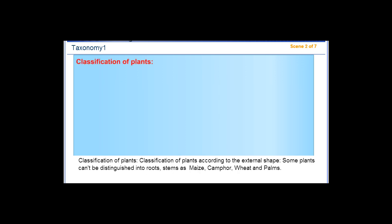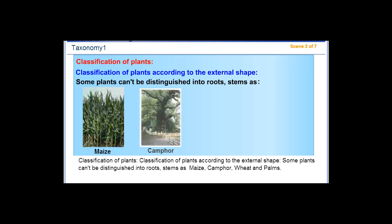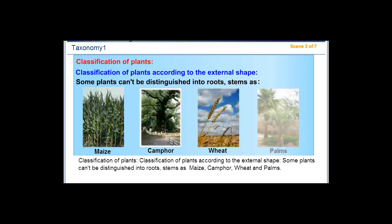Classification of plants according to the external shape. Some plants can be distinguished into roots, stems, and leaves, such as maize, corn, wheat, and palms.